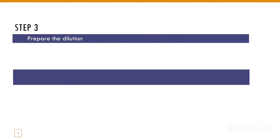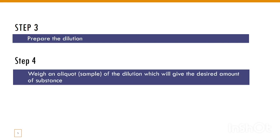The third step is the preparation of the dilution. Using the diluent and drug amounts from the previous step, we mix both the drug and the diluent to produce our dilution. The fourth and final step is the separation of the aliquot — we separate the aliquot from the dilution and weigh that aliquot.